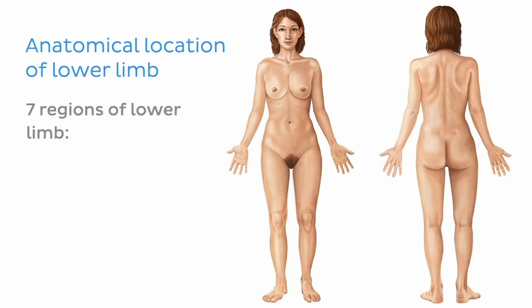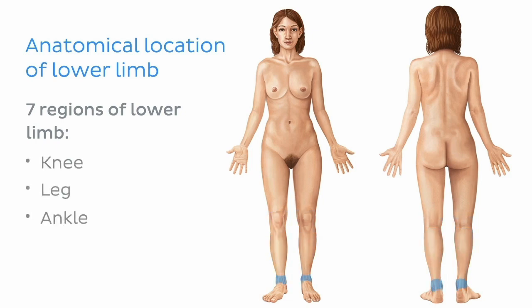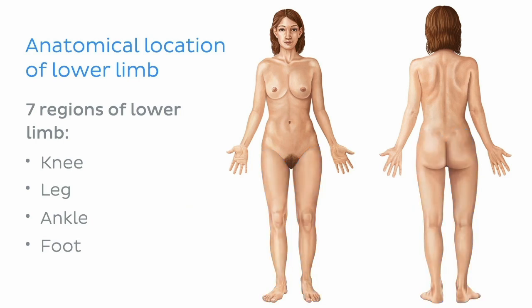There are seven main regions of the lower limb that we're going to meet today. These include the gluteal region, the hip, the thigh, the knee, the leg, the ankle, and the foot. Most of these regions can be divided into anterior and posterior surfaces and are made up of smaller sub-regions, which we will explore as we make our way proximal to distal along the lower limb.